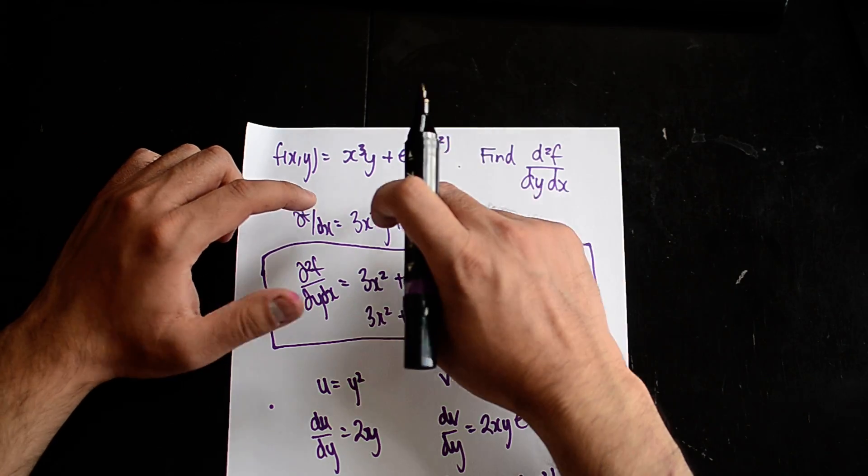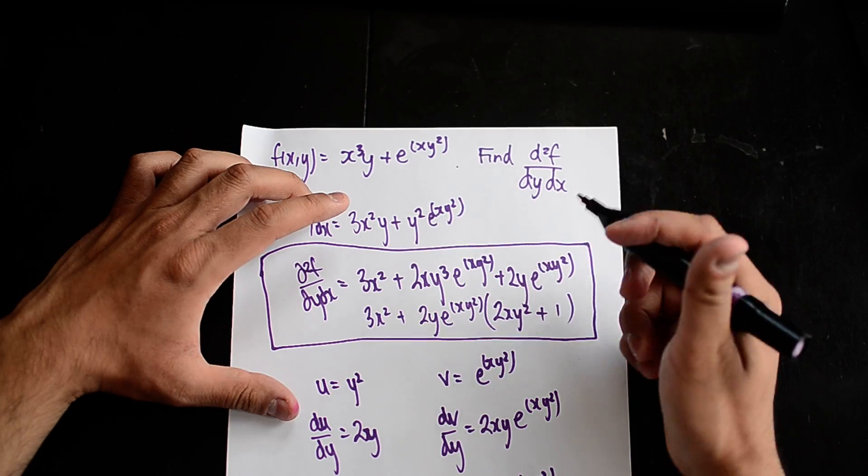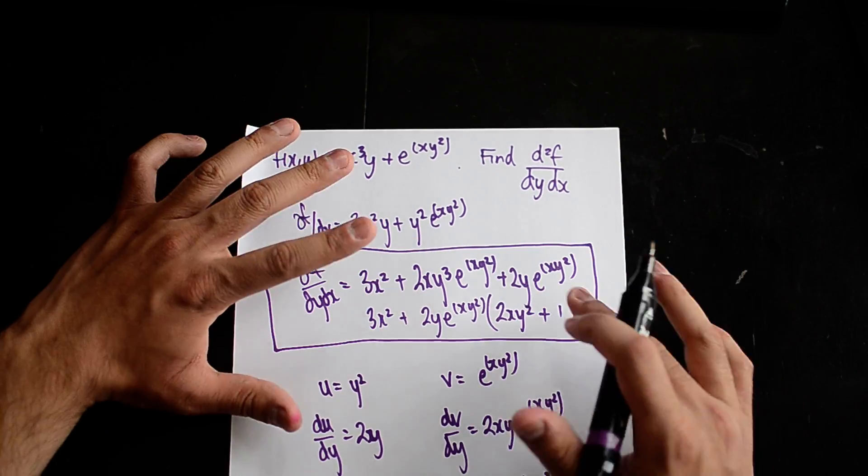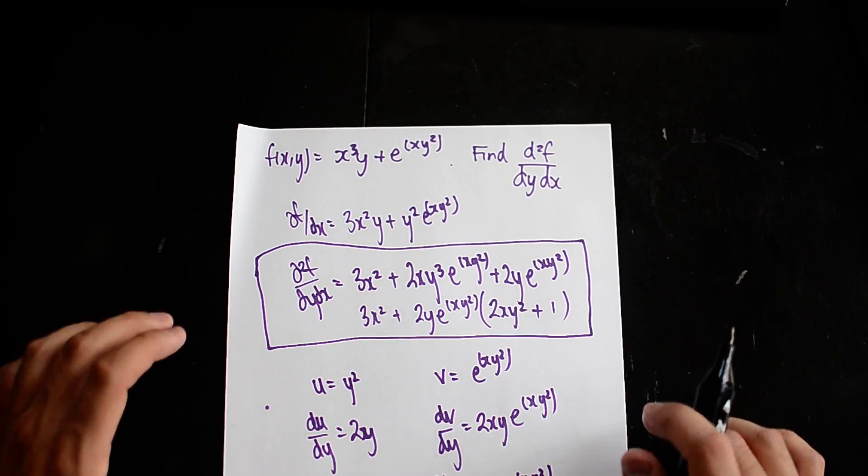So you differentiate this in terms of x, then you differentiate this in terms of y, and then this will give you this answer. So as you can see, for this question I use the product rule a bit, but generally this type of question is quite straightforward.